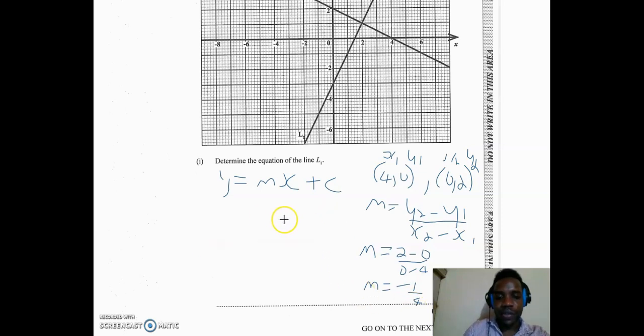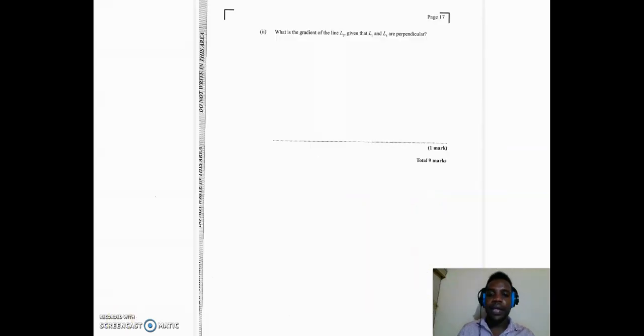Now we have pretty much everything we need to write down the equation of the line. So this is negative 1 half. We're going to have y equal negative 1 half x. And we say that the line cuts the y-axis at 2, so negative 1 half x plus 2. And that is the equation of line 1. Pretty straightforward. We could also use the graph, look at it, and we could have counted off and also find the gradient. It's technically speaking rise over run. Either one works pretty well.